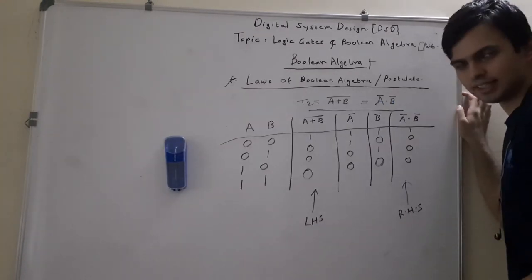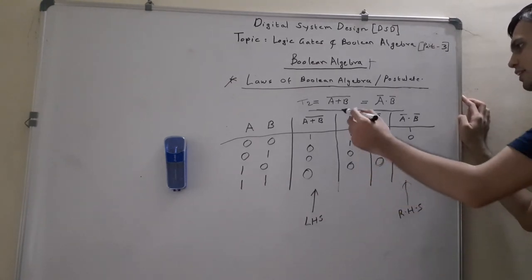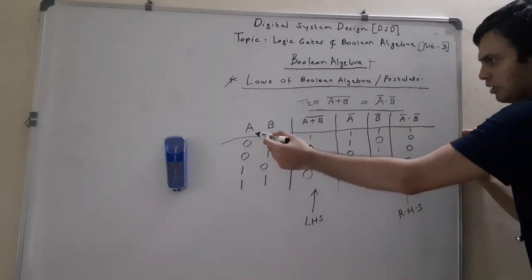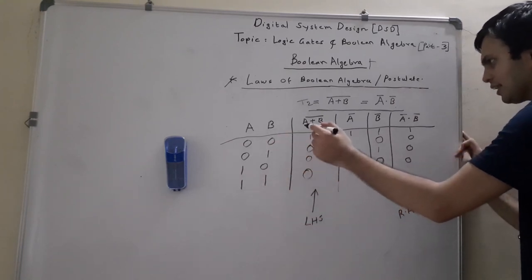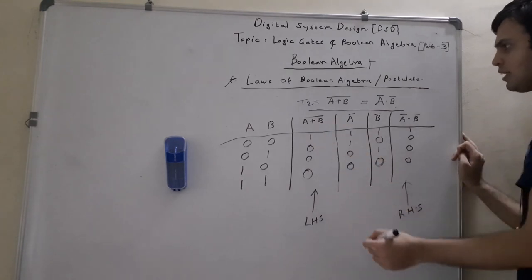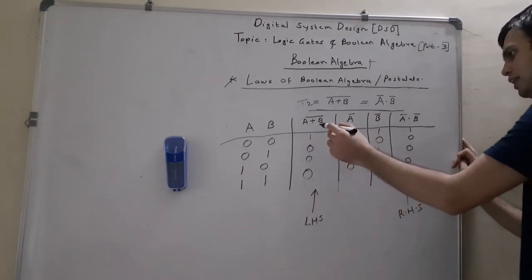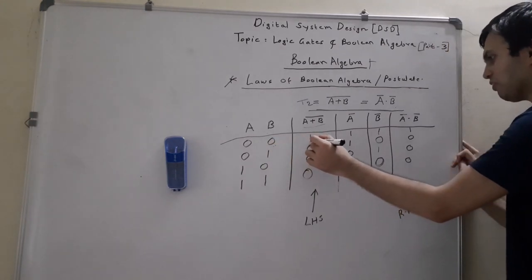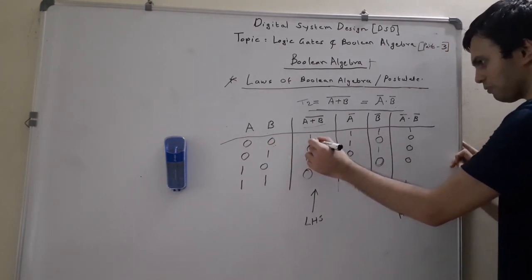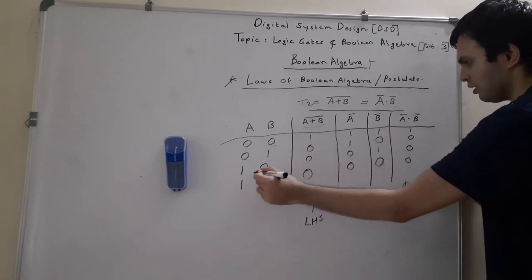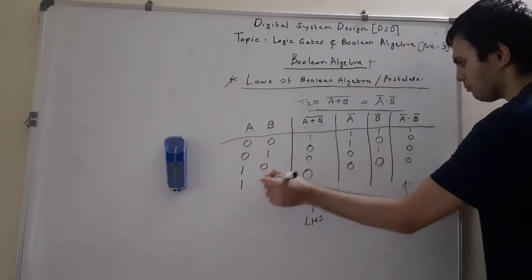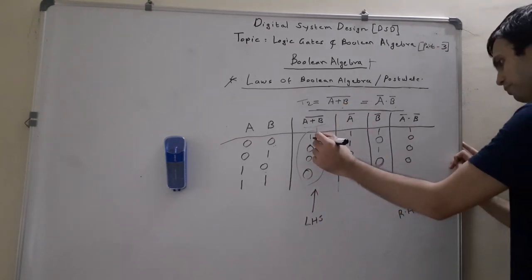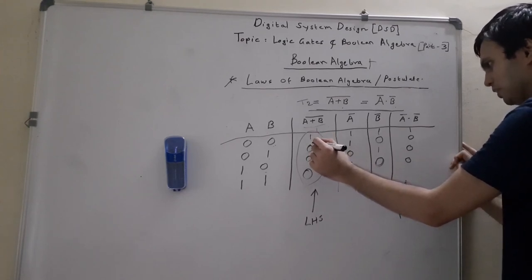Now let us prove the second theorem statement of De Morgan's theorem: A plus B the whole complement is equal to Ā dot B̄, using a truth table. With two inputs there are four possible input combinations. The LHS column is A plus B the whole bar — this is simply the NOR gate truth table. For 00: output is 1. For 01: output is 0. For 10: output is 0. For 11: output is 0. So the LHS column gives 1,0,0,0.